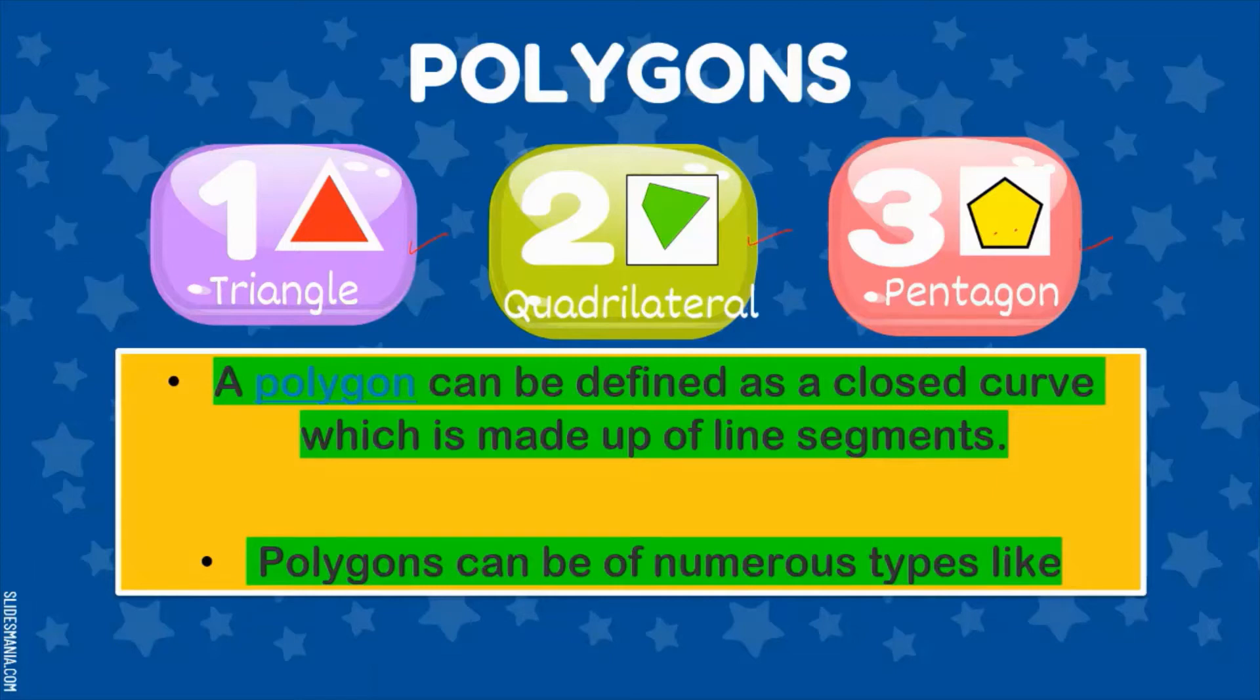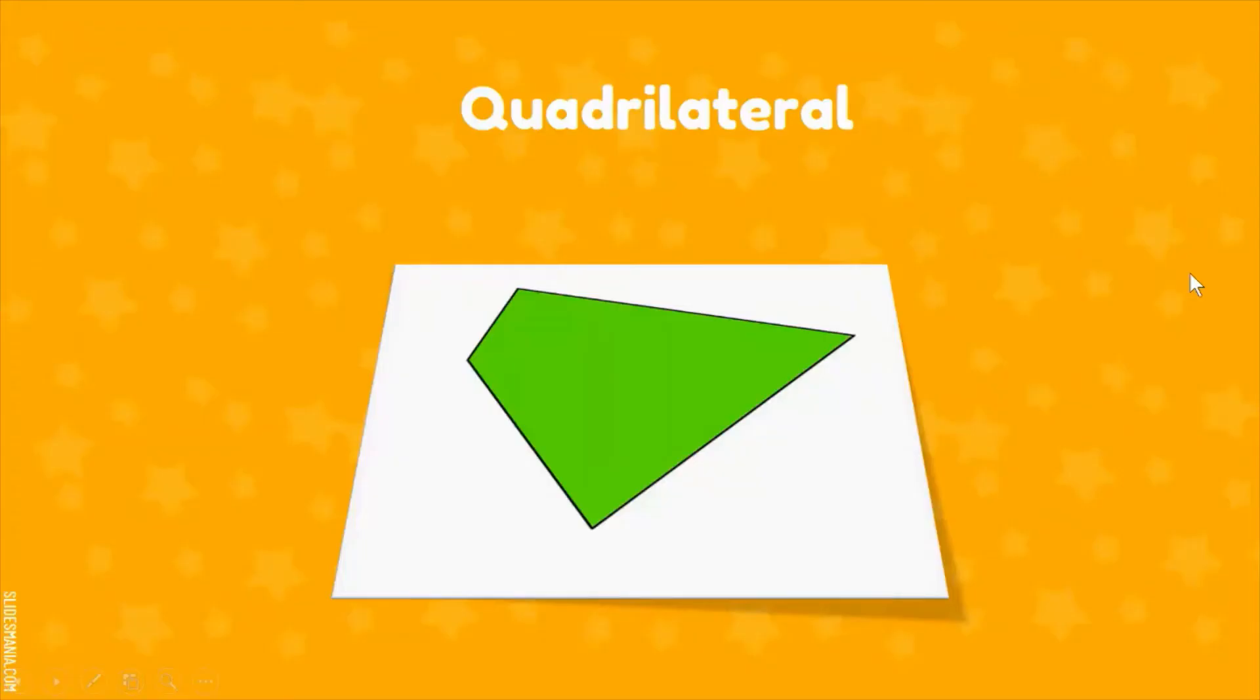Out of these, one type is quadrilateral, and it is made up of four line segments—one, two, three, four. In this video we'll be learning more about quadrilaterals. When you have a quadrilateral, it should be a closed curve made up of four line segments, like I have here: one, two, three, four. So it is a quadrilateral.